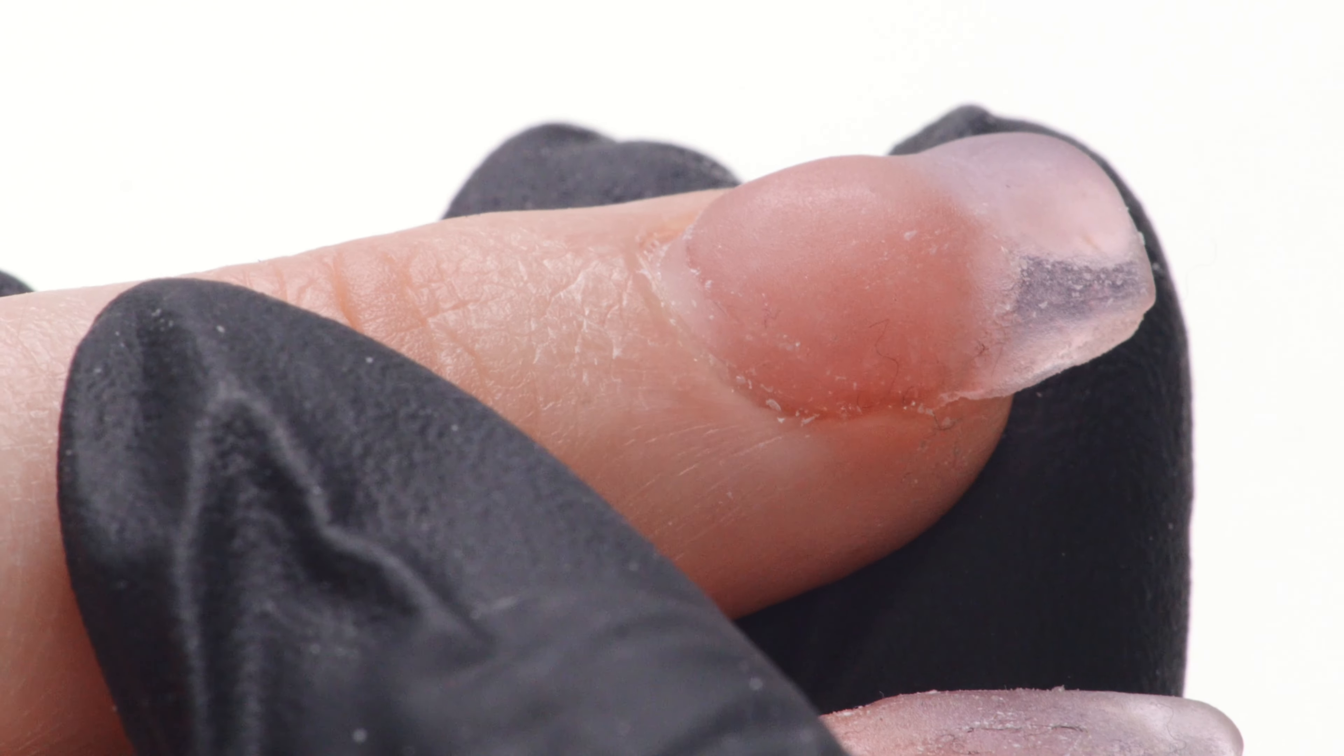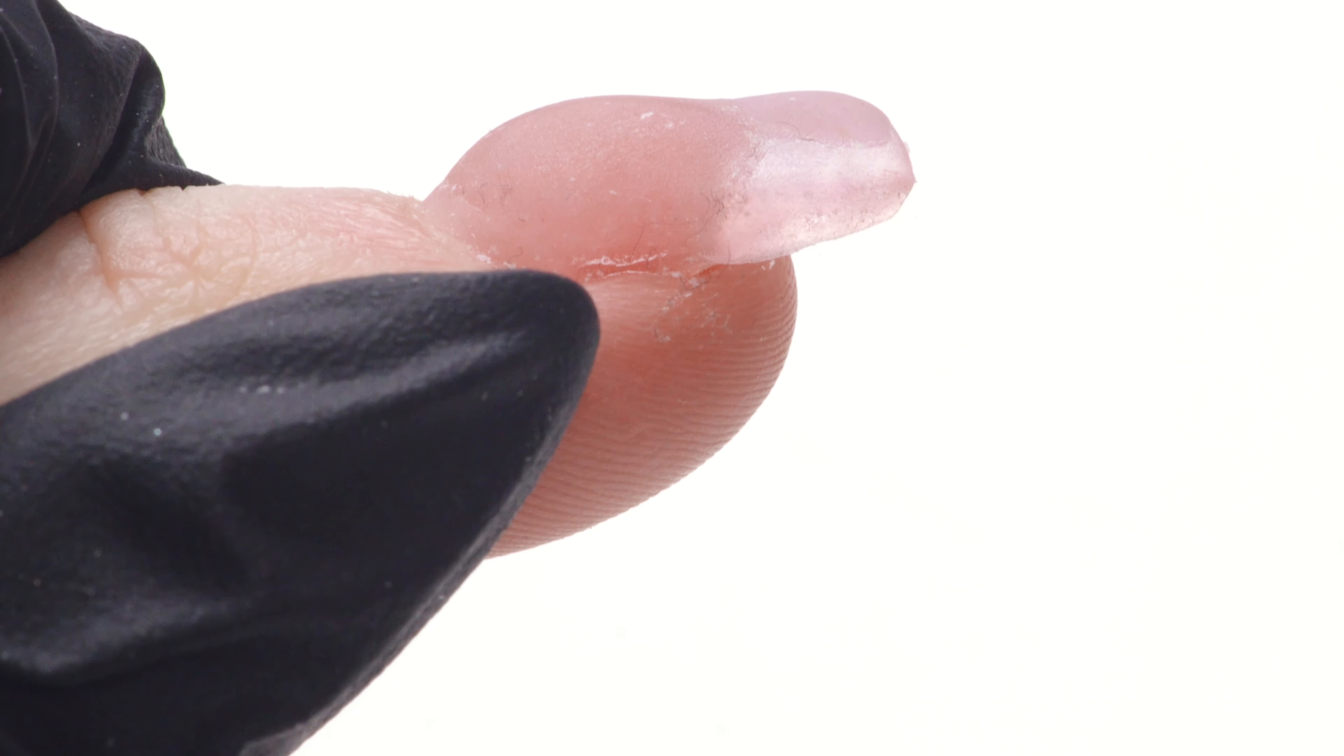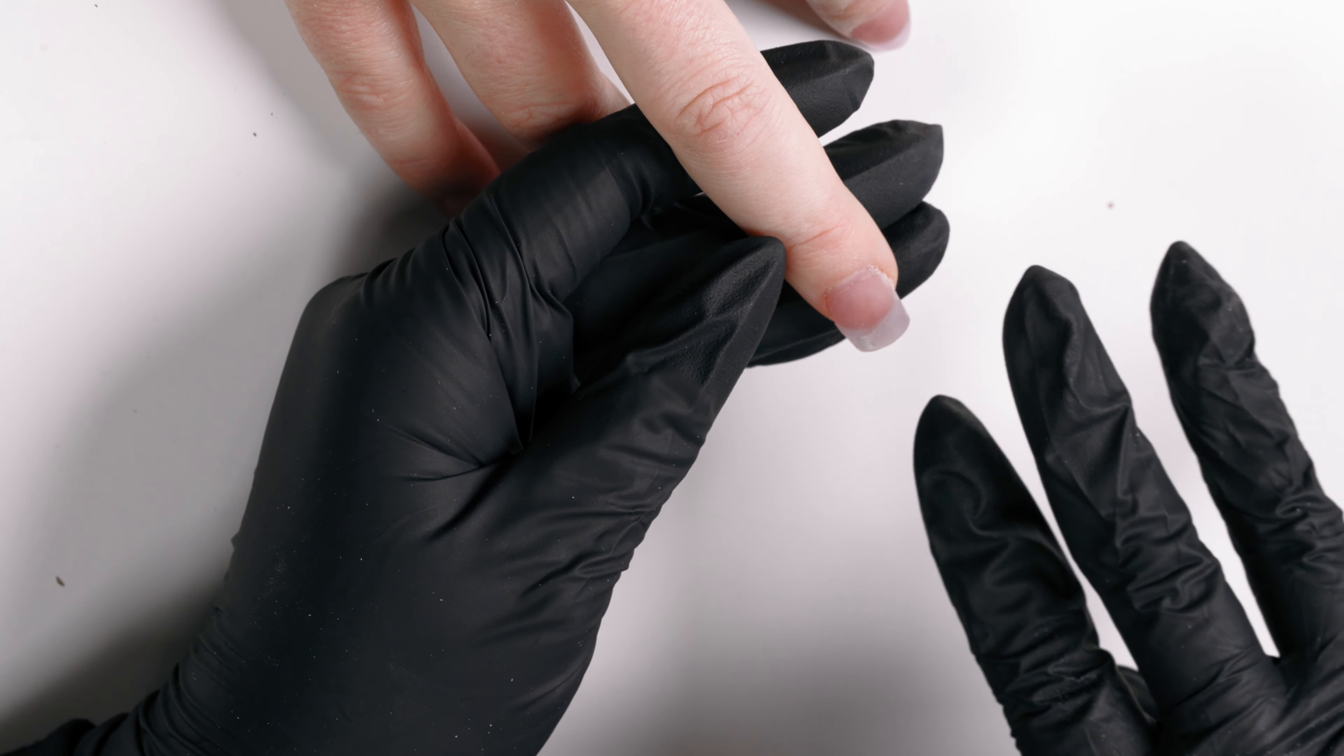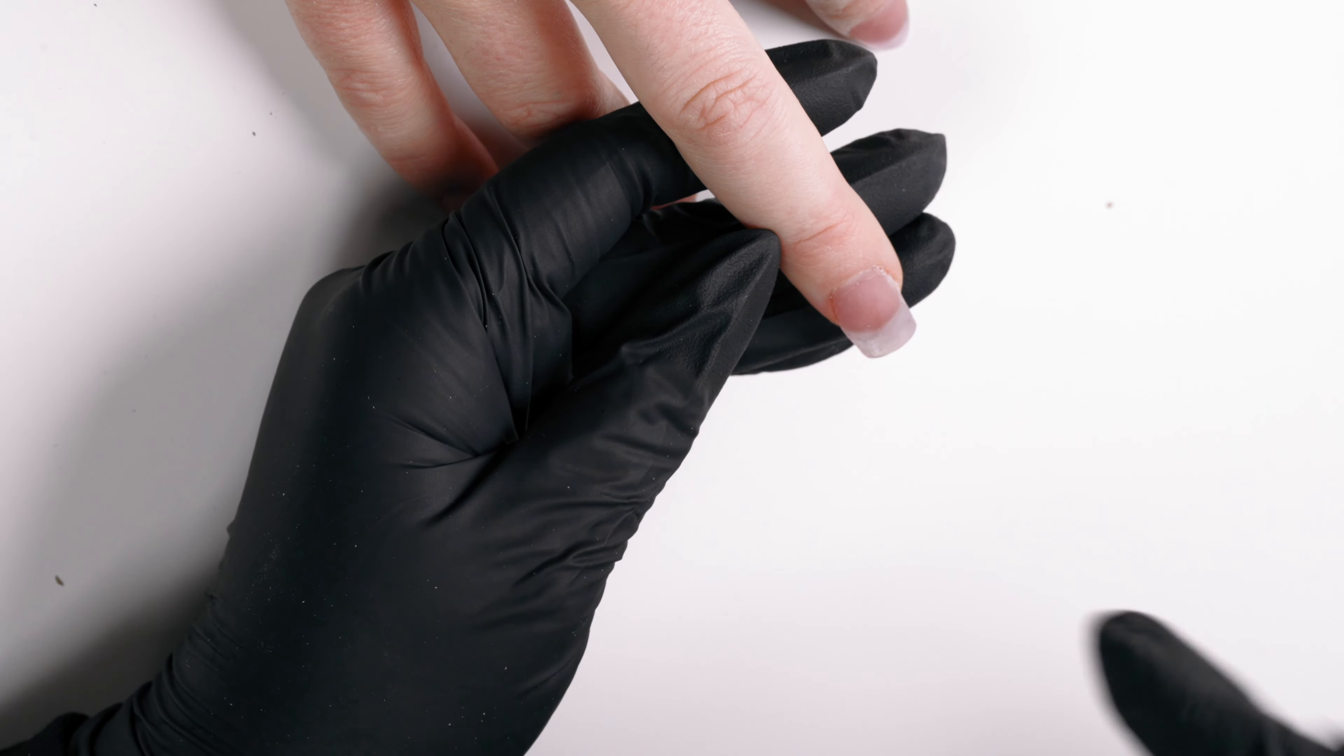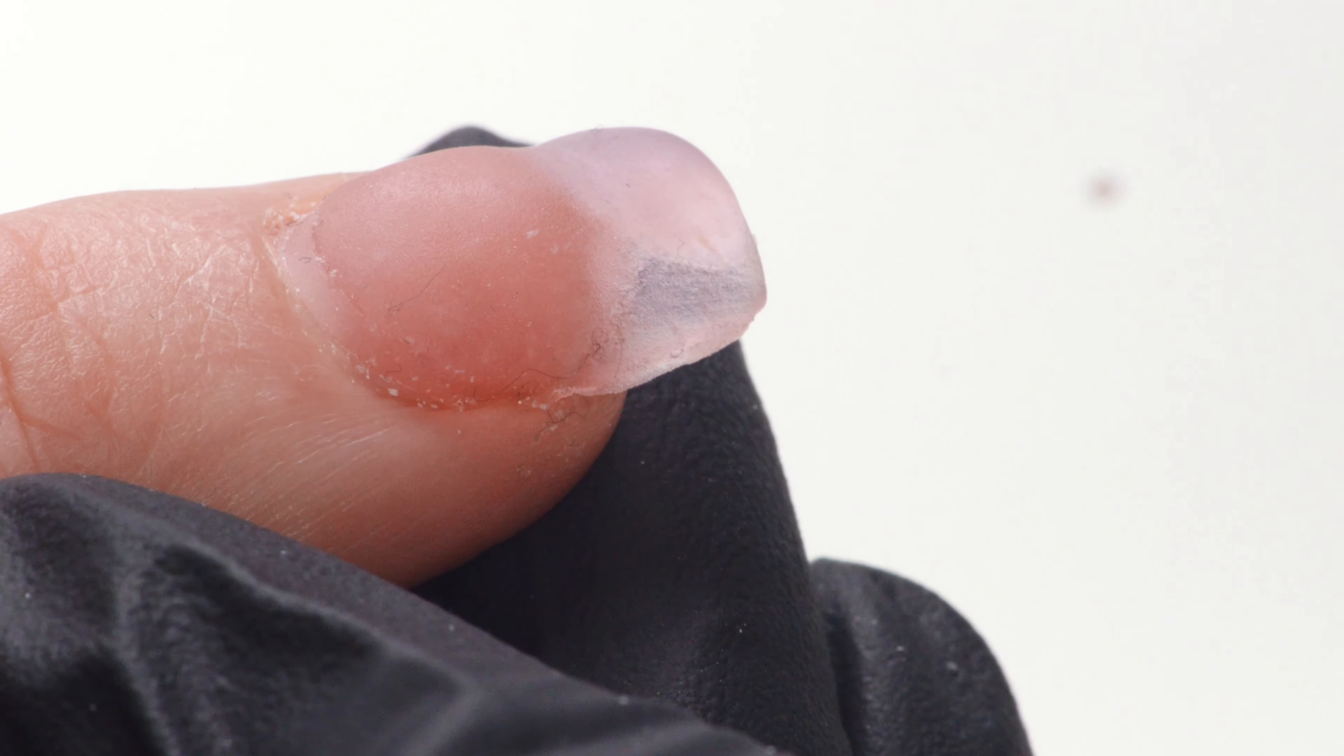This is our bulky nail. This happens to every nail tech and you're going to lay down product or it cures too quickly or your client shifted their hand or you shift their hand, you walked away too soon. It just happens. It's part of like the rite of passage. Who hasn't had a thick nail? So this is the acrylic nail that you made me ruin my soul to build bulky, but it happens to everybody. Everybody ends up with a bulky acrylic or gel. It happens to everybody. So we need to know how to debulk it.